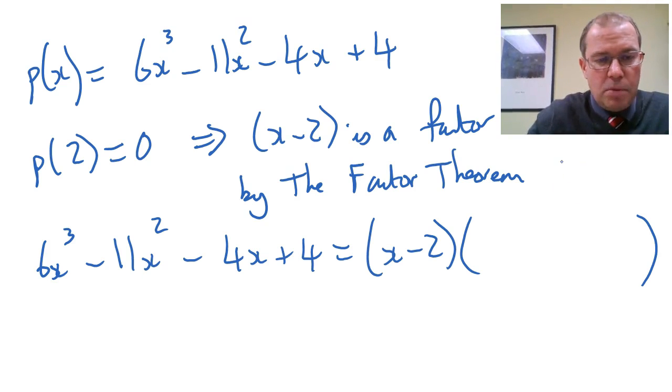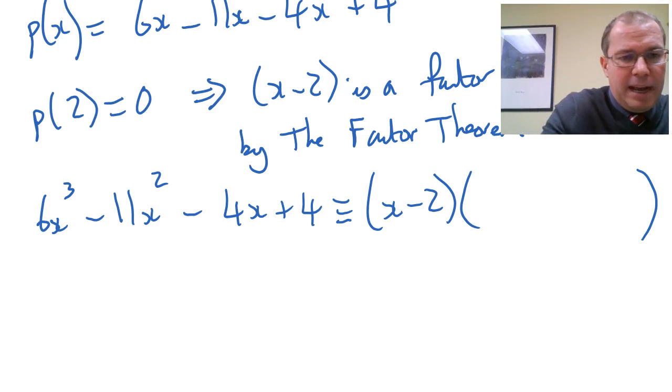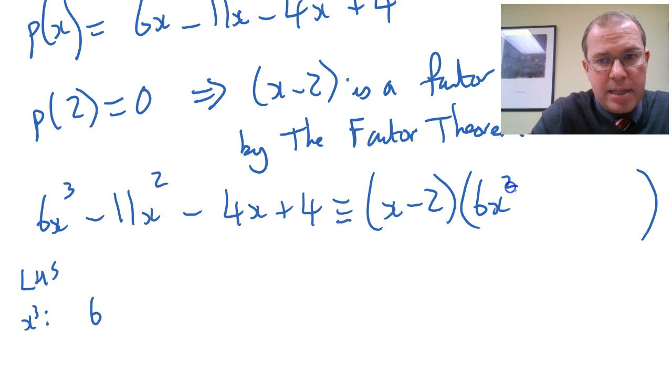I'm going to treat this as an identity, so I'm going to use the congruent symbol with three equal signs there. On the left-hand side, we're going to equate coefficients. I'm going to equate the x cubed terms first. On the left-hand side, I've got 6, so I need 6 on the right. There's only one way to generate x cubed, and that's by putting a 6x squared there. There it is, the 6x cubed.